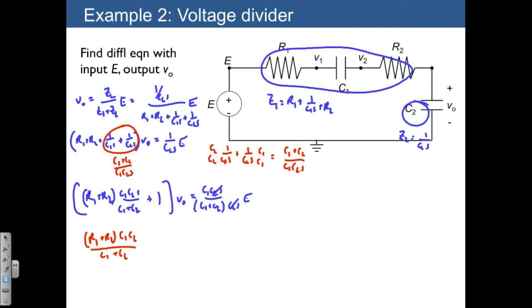let me back up a little bit, and I'll write VO dot plus VO is equal to C1 over C1 plus C2 times E.